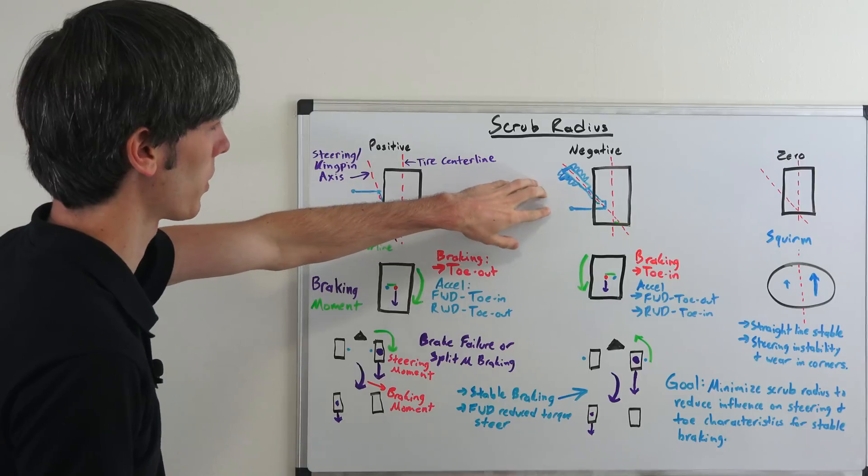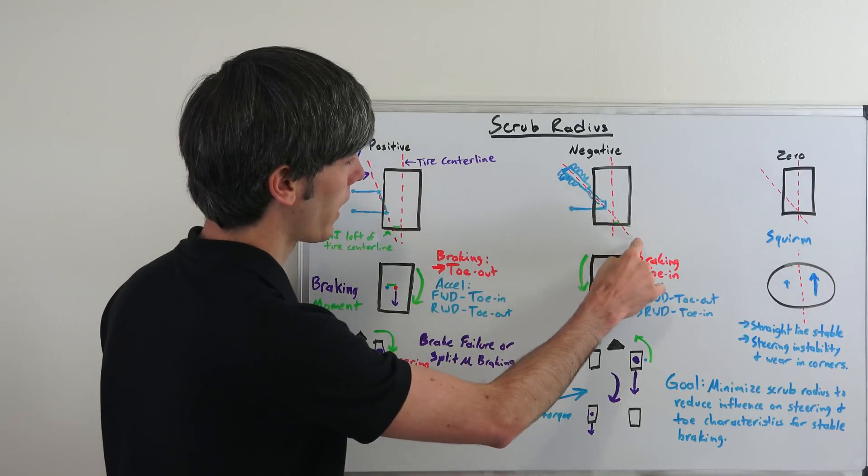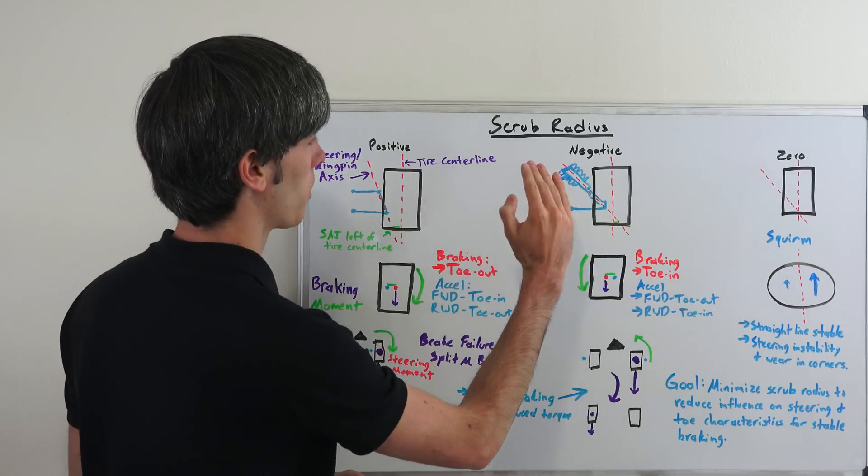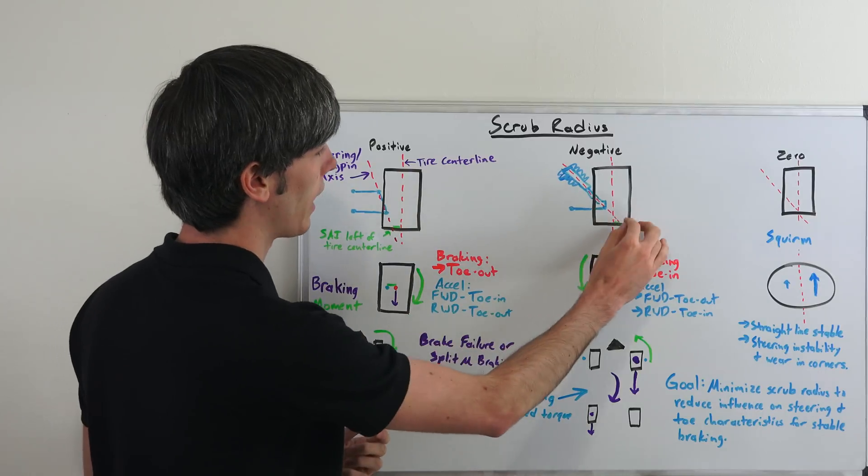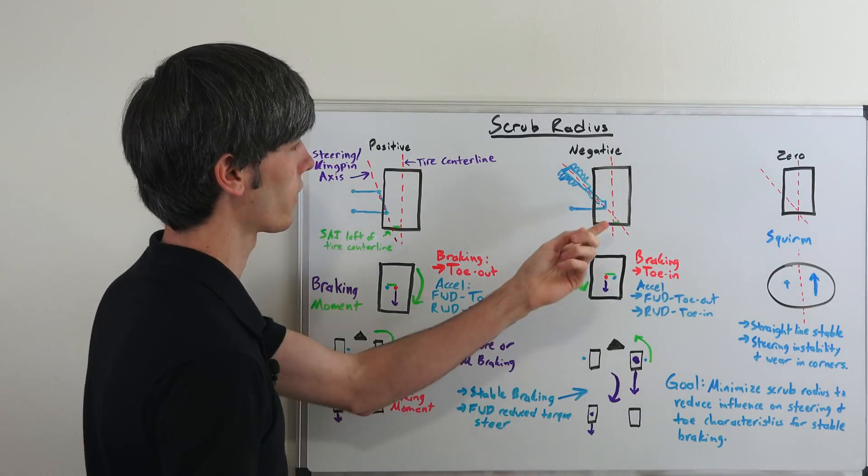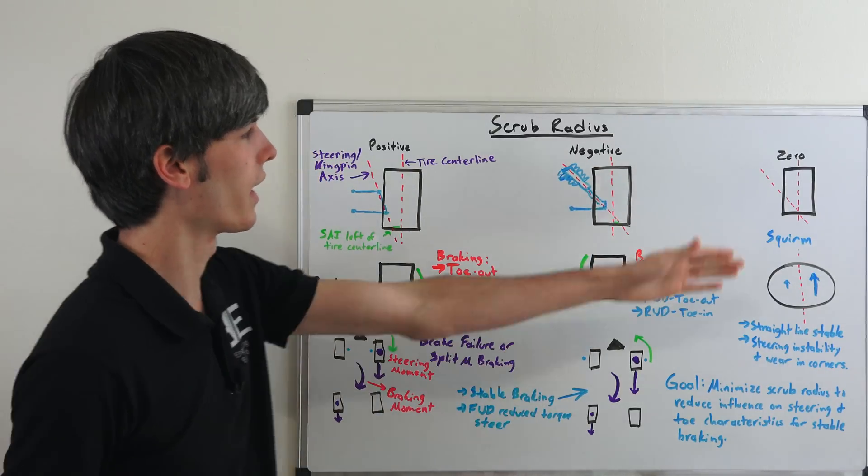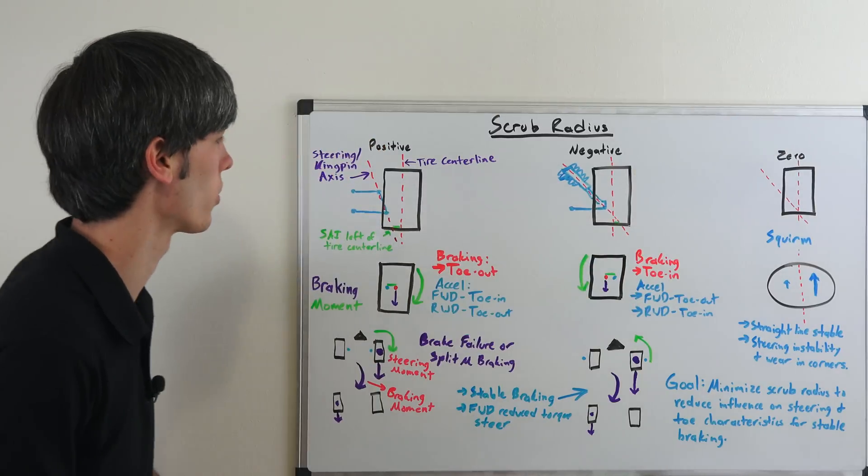If you have like the example here with a McPherson strut where that kingpin axis, basically the point where the tire is going to be rotating around when you steer it, is outside of that tire center line, then that's going to be called a negative scrub radius and then of course if they intersect that's going to be a zero scrub radius.